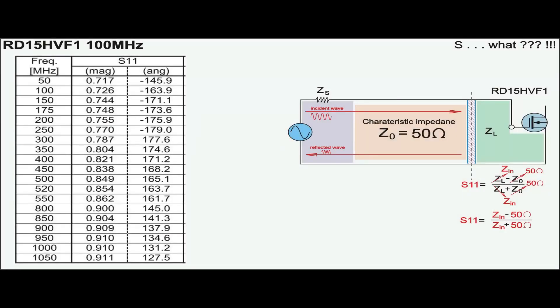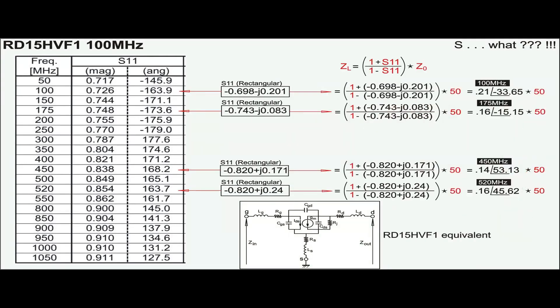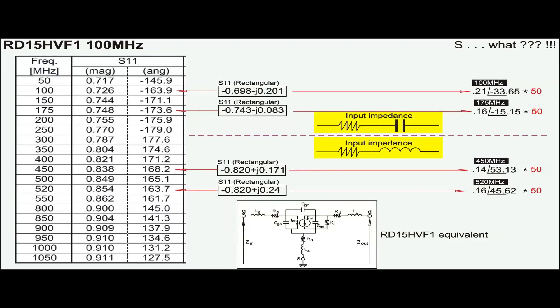Going back to the datasheet earlier, this is how the S11 is converted to input impedance of the RD15, which also implies that below 300 MHz, the impedance is capacitive, and above 300 MHz, the impedance is inductive.